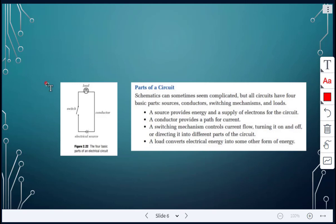All right, just looking at the parts of a circuit again. So again, the four basic parts, the source, the conductor, the switching mechanism, and the load. The source provides the energy, so again here, the energy source, that's going to supply the electrons for the circuit, like the battery. The conductor is the pathway for the current, those are the wires, just shown as the straight lines.